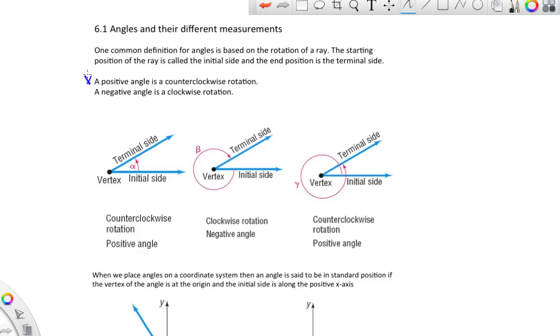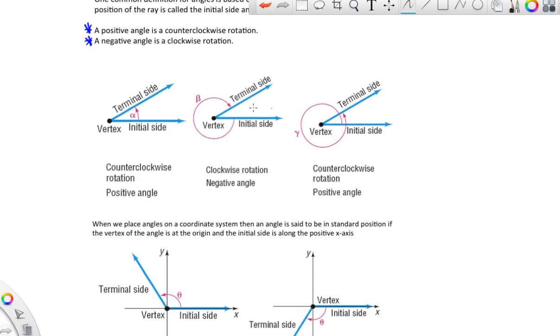You do need to know that a positive angle is counterclockwise and a negative angle is a clockwise rotation. You should also know then that if you do rotations, we have an initial side, we have the rotation, the terminal side, and then there is the vertex of the angle.